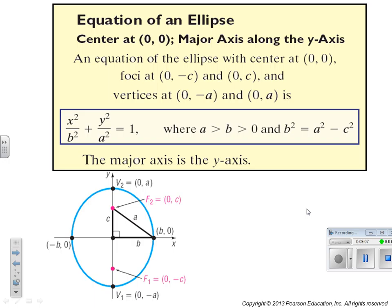What if the major axis is the y-axis? It changes the foci and vertices. The vertices will be on the y-axis at (0, −A) and (0, A). The equation is almost the same except x has B and y has A — that's the only difference. You end up with a tall ellipse, like an egg standing on its head. Whatever axis is the major axis, that's where your vertices and foci lie.